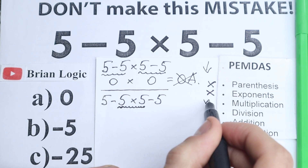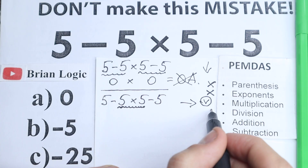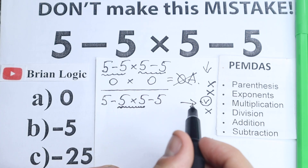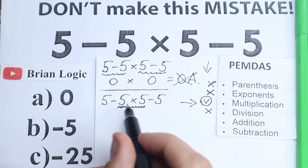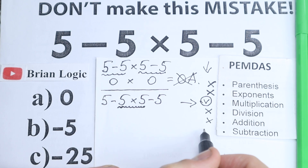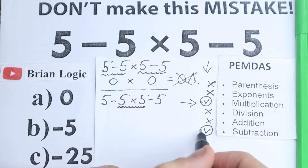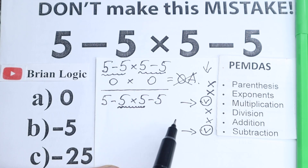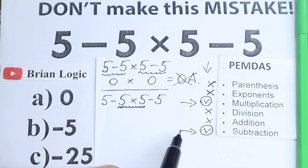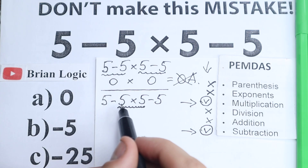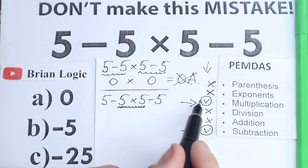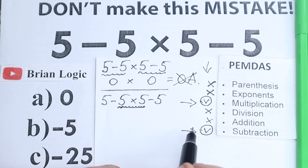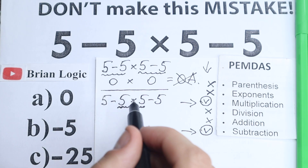We have multiplication here and no division — but that doesn't matter, we have multiplication so we need to start there. One really important point: we don't have any addition sign, only subtraction. So we have only two steps from PEMDAS: multiplication and subtraction. Multiplication always comes before subtraction — you need to multiply first, then subtract the result, regardless of where the multiplication appears in the expression.